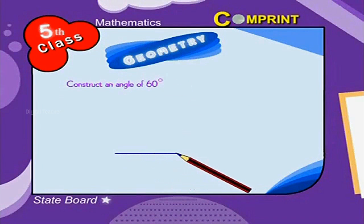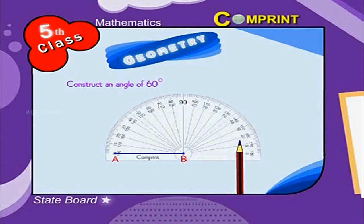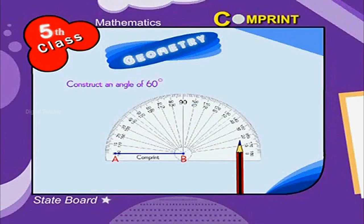draw a line segment having A and B. Place the center of the protractor on B and adjust it in such a way that the baseline coincides with side AB.